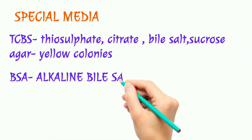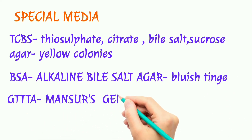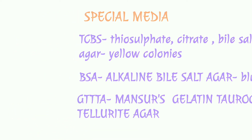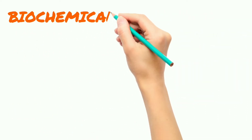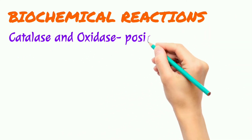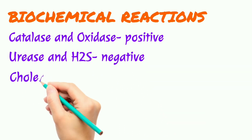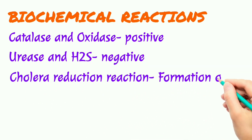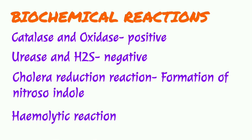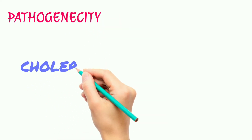On BSA — alkaline bile salt agar — it shows a bluish tinge. On GTTA — monsur's gelatin taurocholate tellurite agar — biochemical reactions: it is catalase and oxidase positive, urease and H2S negative. Cholera red reaction, formation of nitrosoindole, and hemolytic reaction.